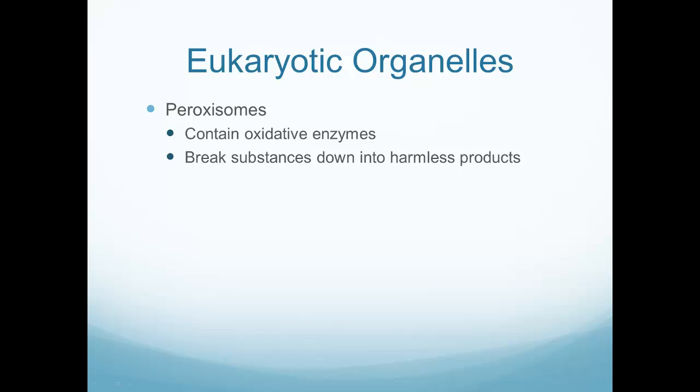These organelles are called peroxisomes. Notice the word contains 'peroxide' — peroxide is a chemical that oxidizes. When you put it on a wound and it foams up, that's an oxidative process going on. Peroxisomes are important because they break down substances that may be harmful into harmless products inside the cell using an oxidative process.